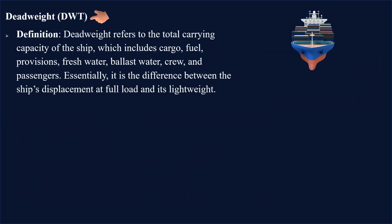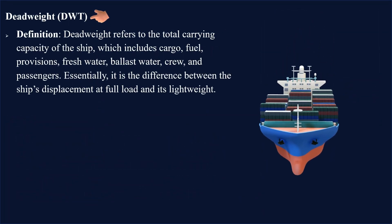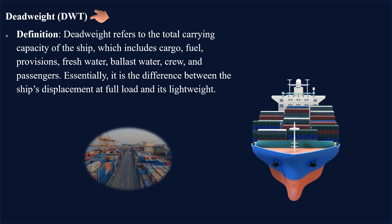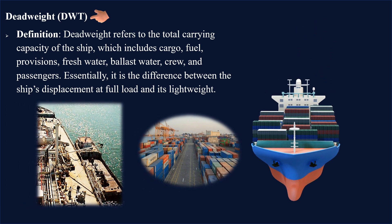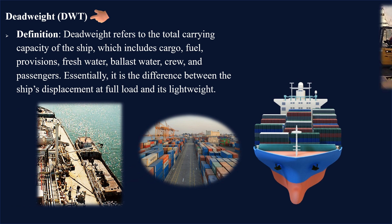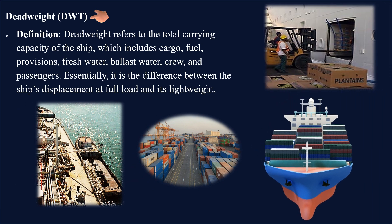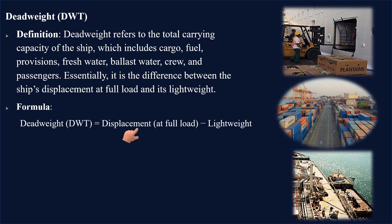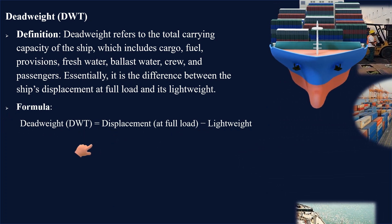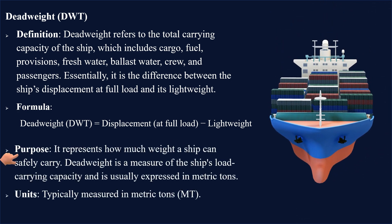Dead weight is the total carrying capacity of the ship, which includes cargo, fuel, provisions, fresh water, ballast water, crew, and passengers. Essentially, it is the difference between the ship's displacement at full load and its lightweight. It represents how much weight a ship can safely carry, and is usually expressed in metric tons.